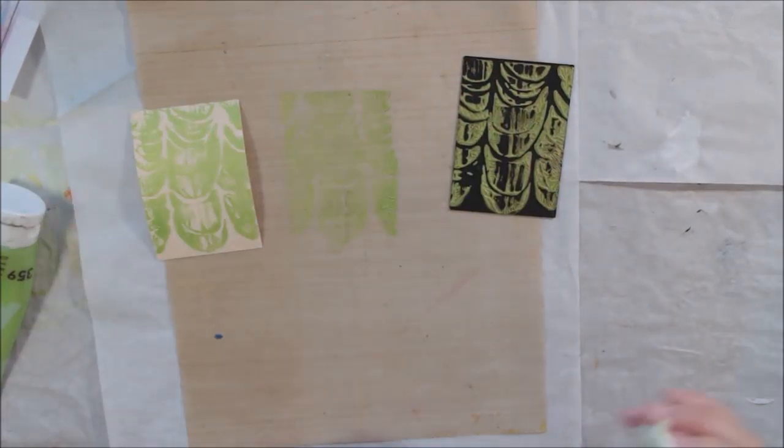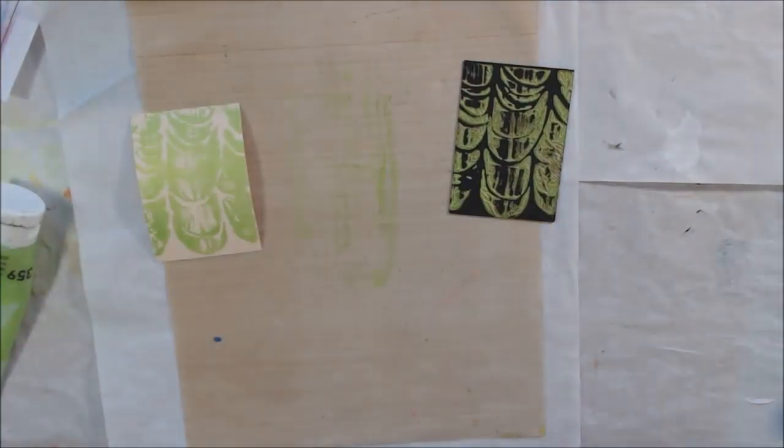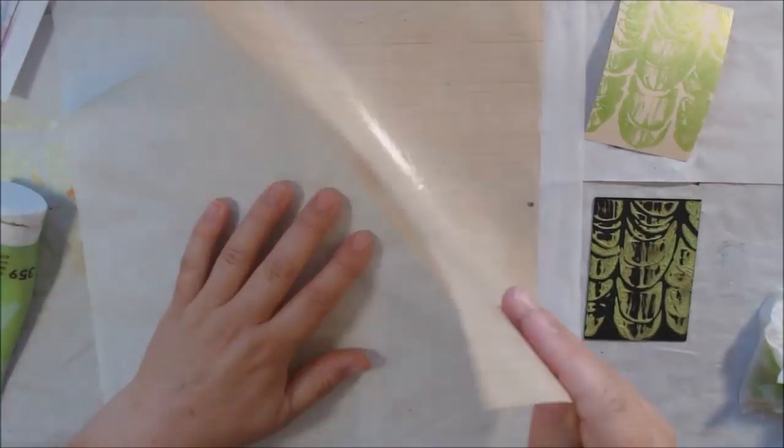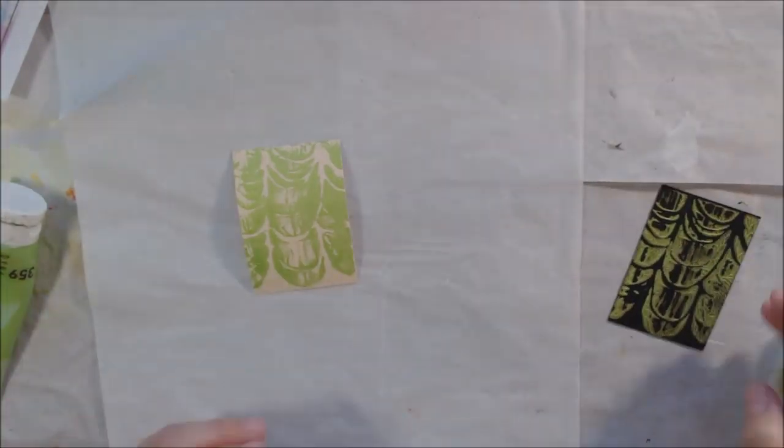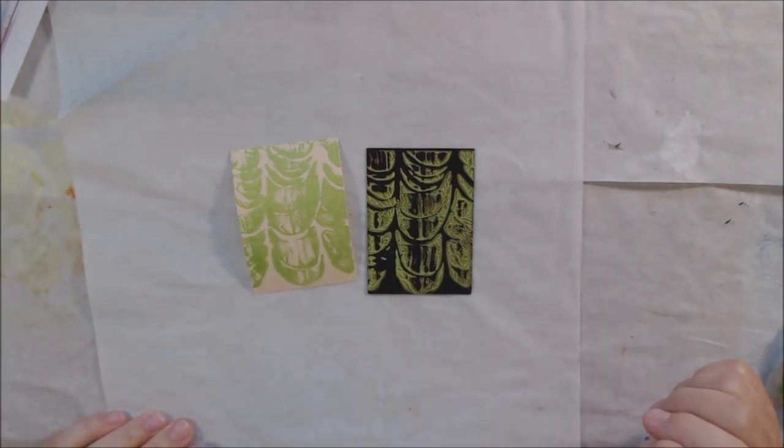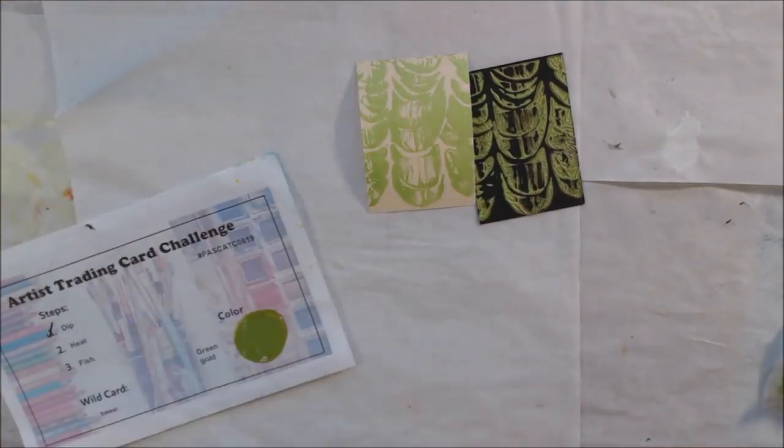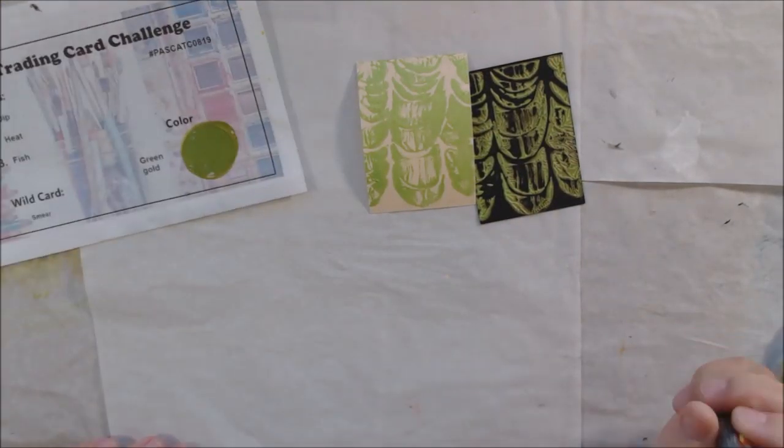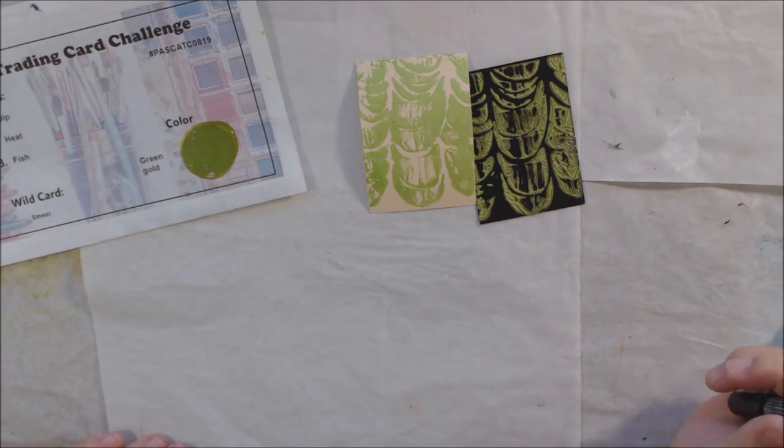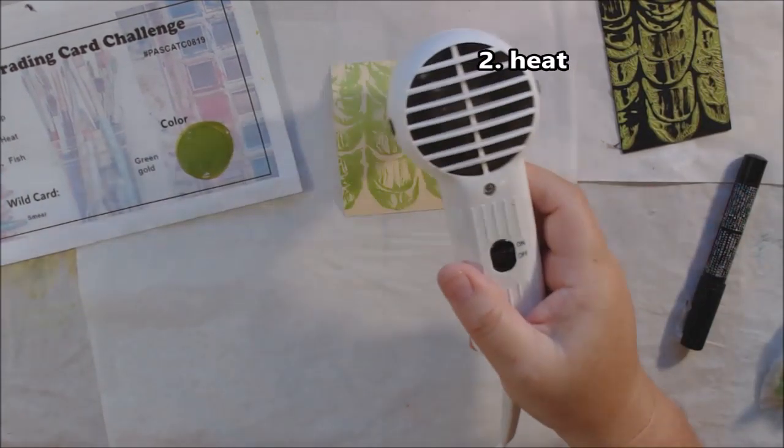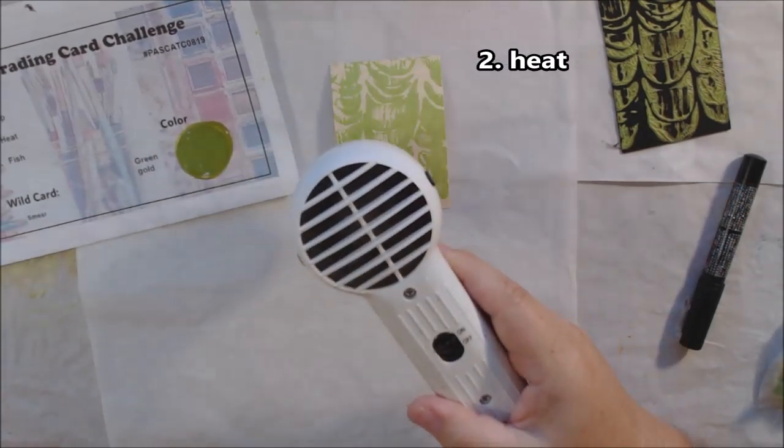I decided to get some pattern on my artist trading cards. I started with this one painted with black gesso because I thought it would be fun to start with a dark background. The color for this month's challenge is green gold. I had this metallic paint that would look cool on the black.